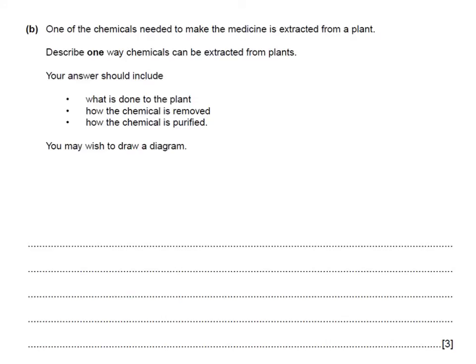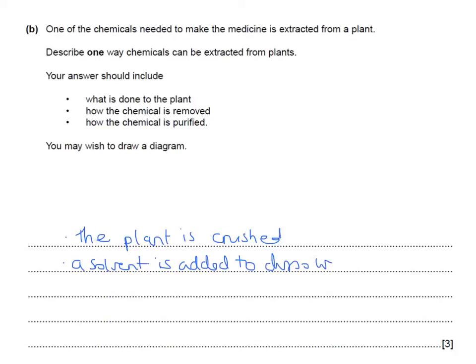Here's a past paper question: 'One of the chemicals needed to make a medicine is extracted from a plant. Describe one way that chemicals can be extracted from plants — your answer should include three main points.' First, the plant is crushed — that's one mark. Second, a solvent is added to dissolve the material. Third, it's purified by chromatography. You must learn these three things: crushing, adding a solvent, and chromatography or distillation.